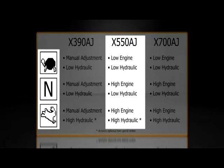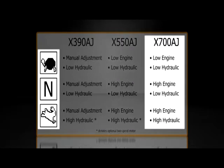If there is only one speed, the hydraulic speed will remain on low. For the X700AJ, turtle means low engine and low hydraulic speed, N means high engine and low hydraulic speed, and rabbit means high engine and high hydraulic speed.